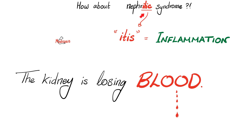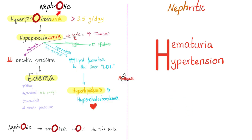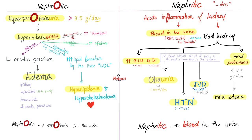Anti-glomerular basement membrane antibody disease is a nephritic syndrome — itis means inflammation. The kidney is injured and shedding tears of blood into the urine. Nephrotic syndromes have four features: high protein in the urine, low protein in the blood, edema, and hyperlipidemia. On the other hand, nephritic syndromes have seven features. The most important two are hypertension and hematuria. The full seven are: hypertension, hematuria, jugular venous distension, oliguria, mild edema and proteinuria, and elevated BUN/creatinine — azotemia — leading to acute kidney failure, which can progress to chronic kidney disease and eventually end-stage renal disease, requiring dialysis or transplant.